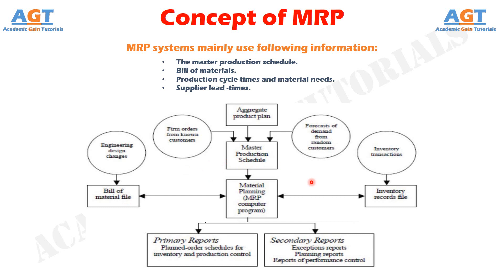The master production schedule includes quantities of products to be produced at a given time period. Quantities are included both at aggregate and detailed levels. Aggregate may refer to monthly production and detailed may refer to weekly or daily production. The master production schedule is a tabular form in which rows represent products and columns represent time components.